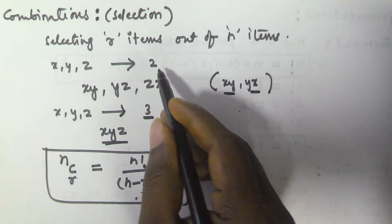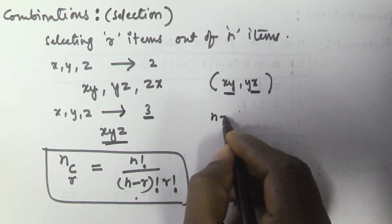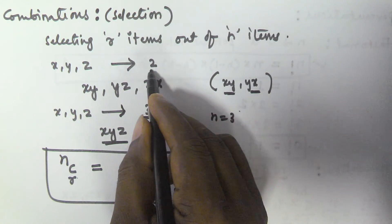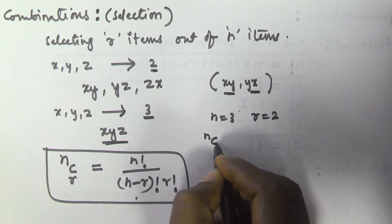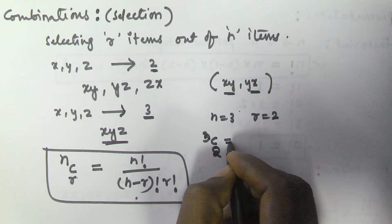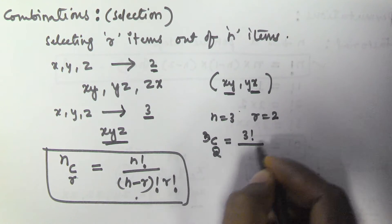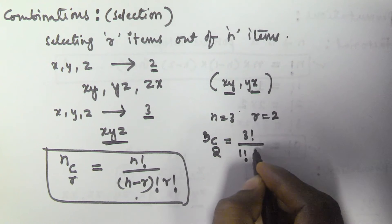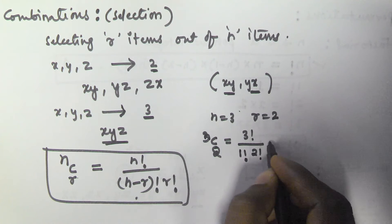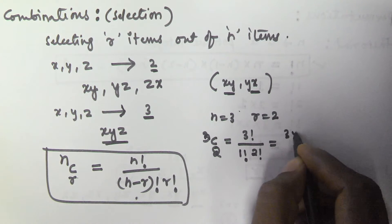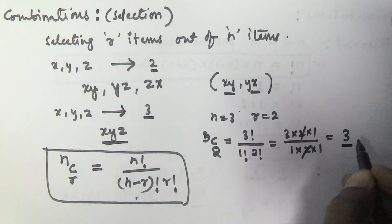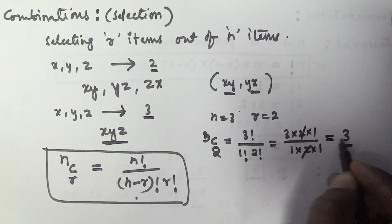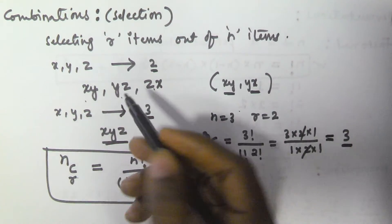For example, we have three variables so n equals 3, and we are selecting 2 at a time so r equals 2. That gives us 3C2, which equals 3 factorial divided by (3 minus 2) factorial into 2 factorial — that is 3×2×1 divided by 1×2×1. The 2 cancels and we get 3. So there are 3 possible selections: x,y, y,z, and z,x.